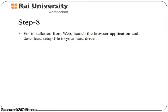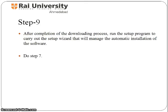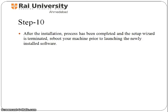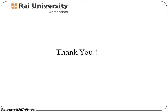Application software installation from the web is done by launching the browser application and downloading the setup file to your hard drive. When the downloading process is completed, you need to run the setup program to carry out the setup wizard, which will manage the automatic installation of the software. Simply follow the prompts until the installation process is completed. Once the installation process has been completed and the setup wizard is terminated, reboot your machine prior to launching the newly installed software. I hope you have come to know the installation procedure of application software.